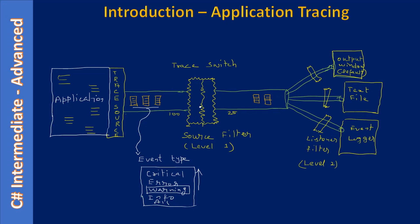So only warning messages and above get past the first level filter — error and critical are also included. Similarly, if you set the filter to 'error,' only error and critical reach all destinations. If you set 'all,' all messages pass through. If you set 'critical,' only critical messages pass through and everything else gets filtered out.